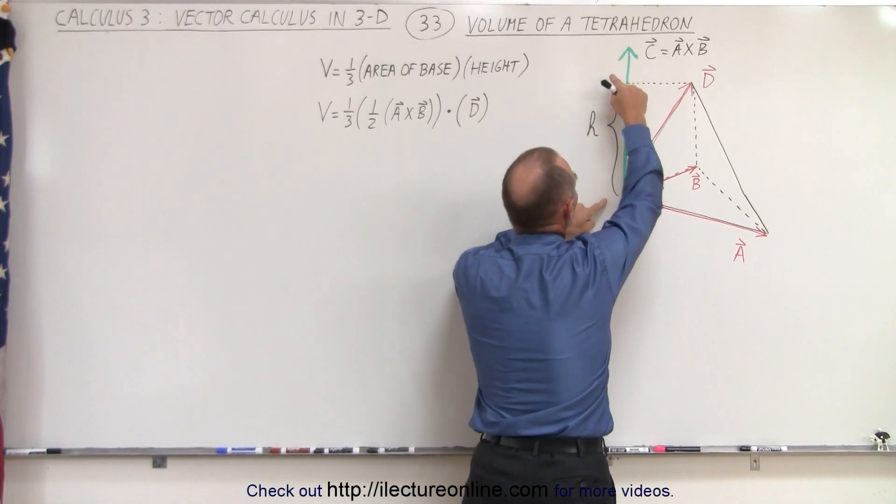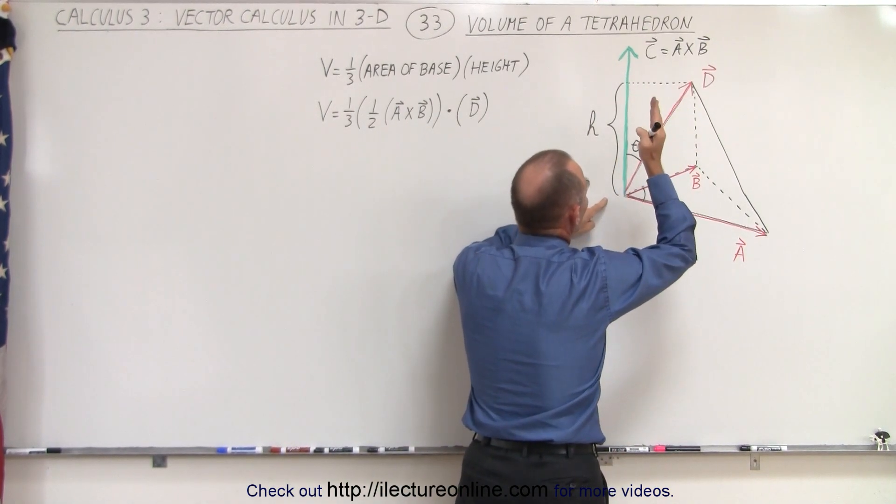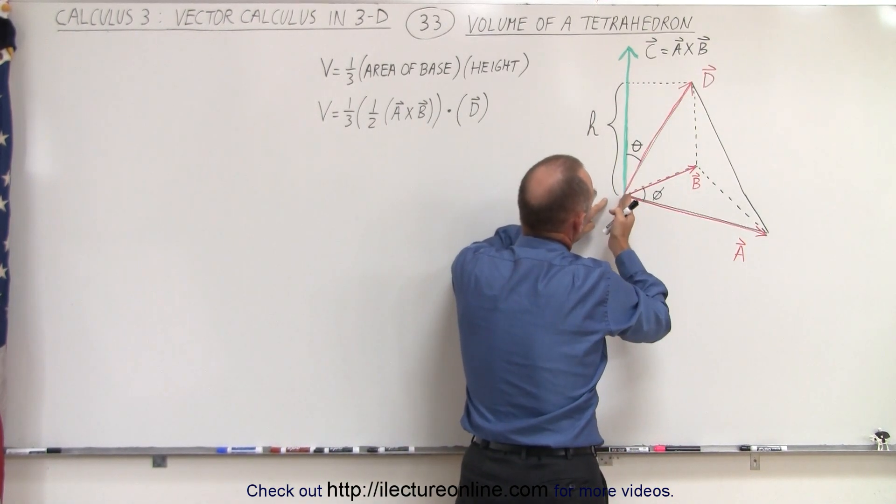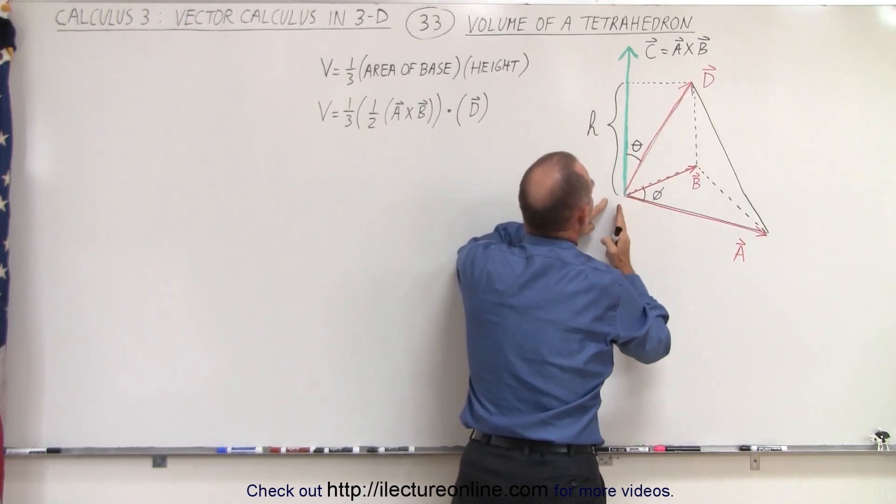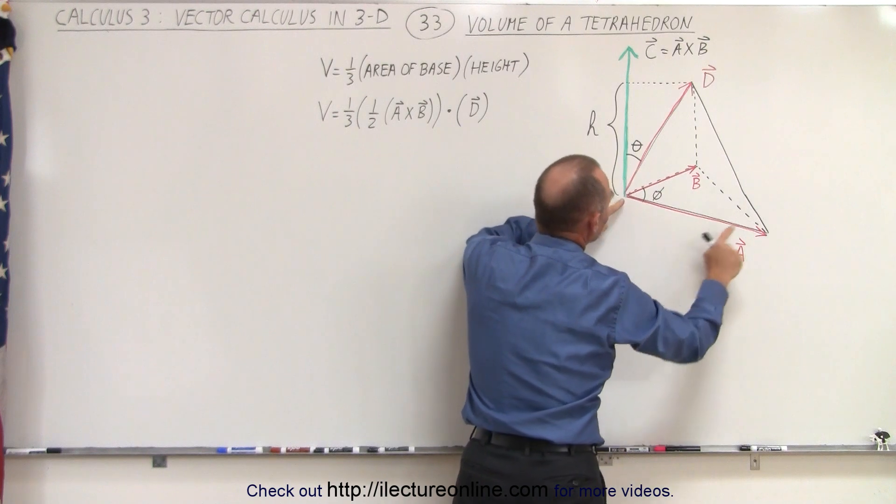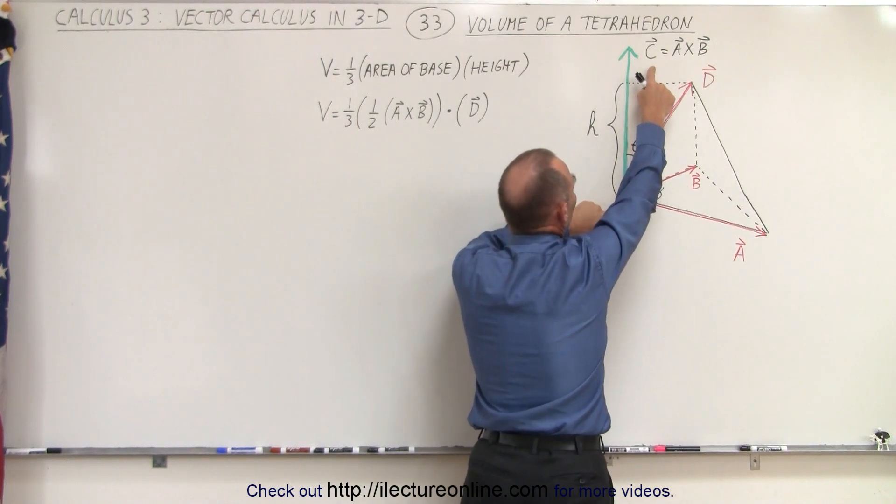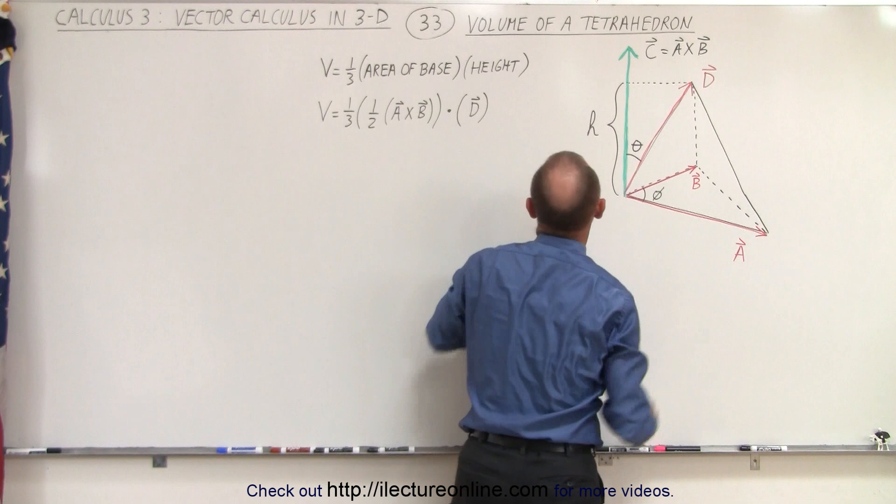The way to find the height is to then do a dot product between one of the vectors along the side here, of the tetrahedron, and the perpendicular relative to the base. Of course the perpendicular, the vector C, can be found by doing A cross B.